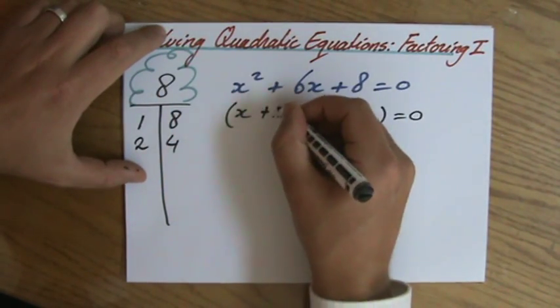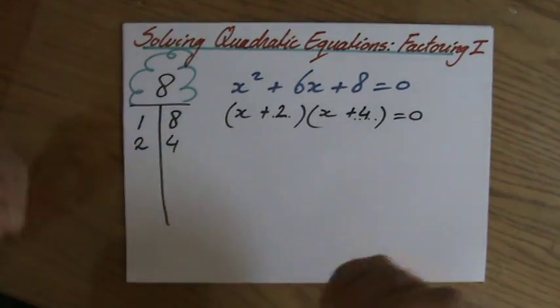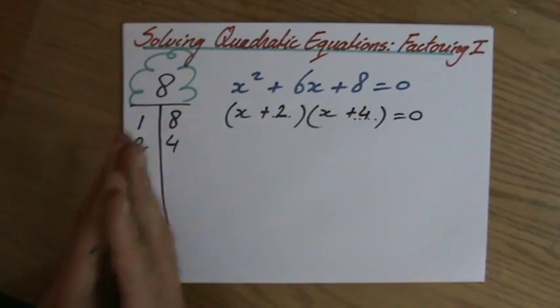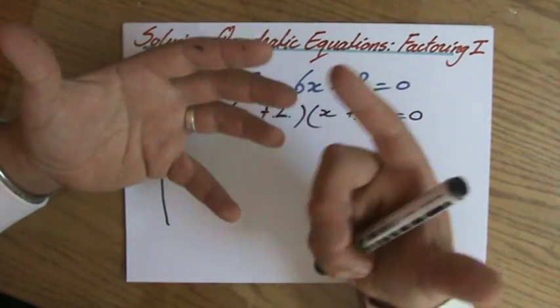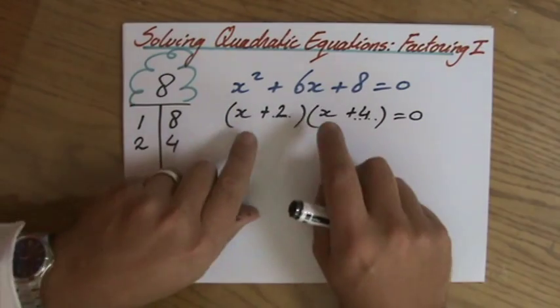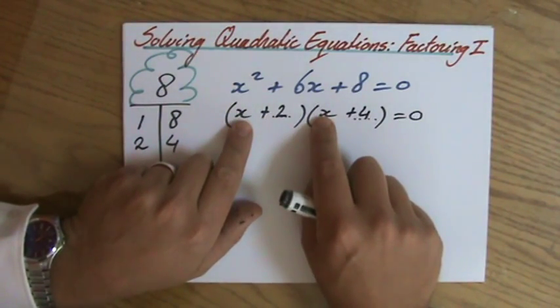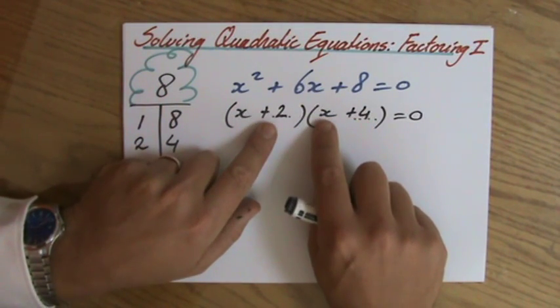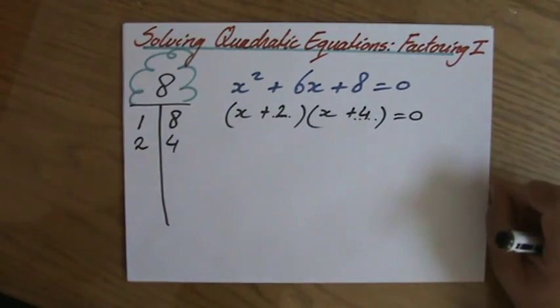So it is actually plus 2 plus 4. Let me just quickly check that. I always check that because it's so easy to make a silly mistake here. So I'll quickly expand it. I still use my fingers, okay? So you can do the same thing. X squared, so I'm expanding it now. 4x plus 2x. That is my 6x. And 2 times 4 is 8. Fantastic. Didn't make a mistake.